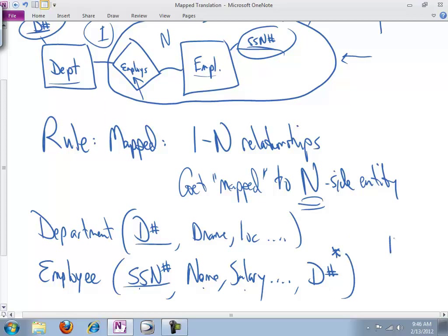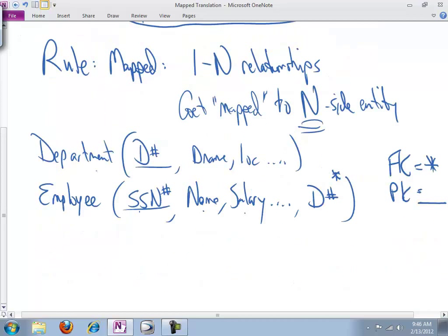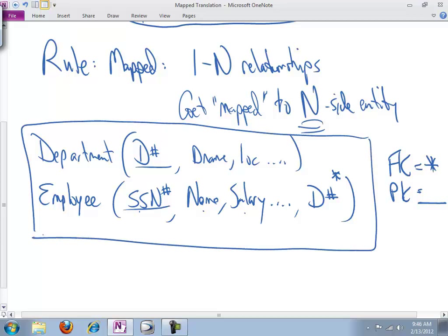So this, and we depict foreign key, or FK, is indicated by an asterisk, just like primary key is indicated by an underline. So now we have a fully realized translation of that relational schema.